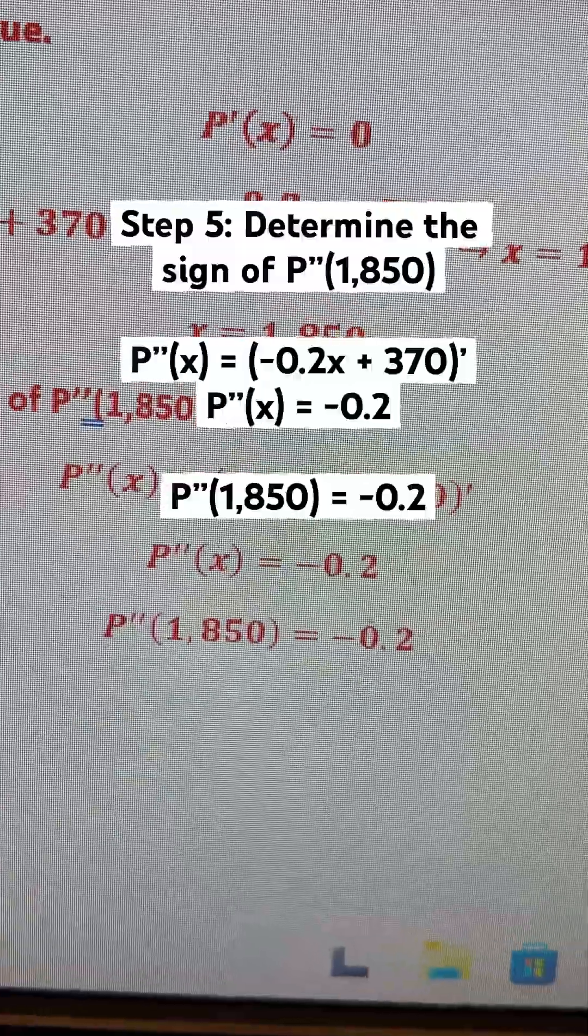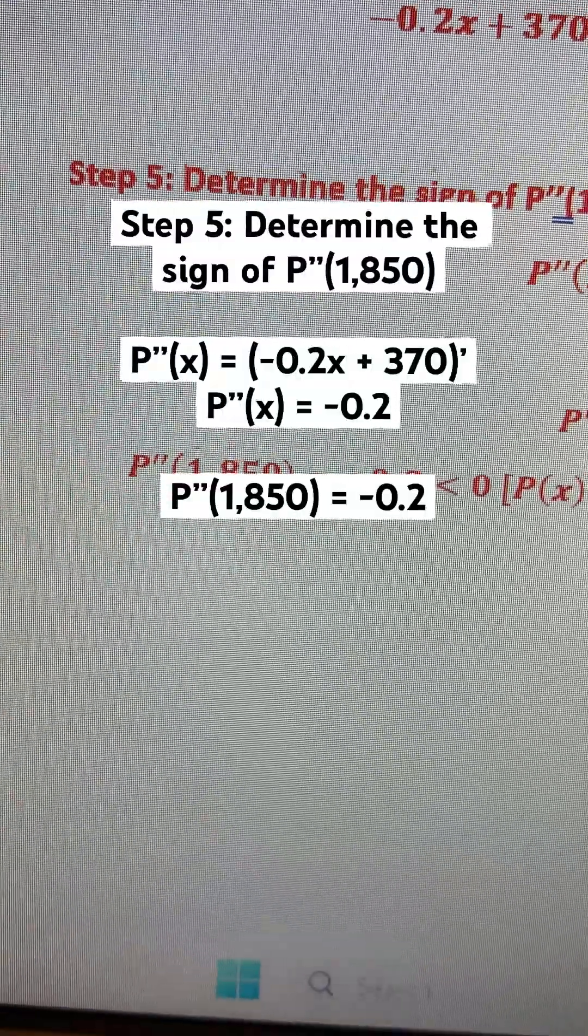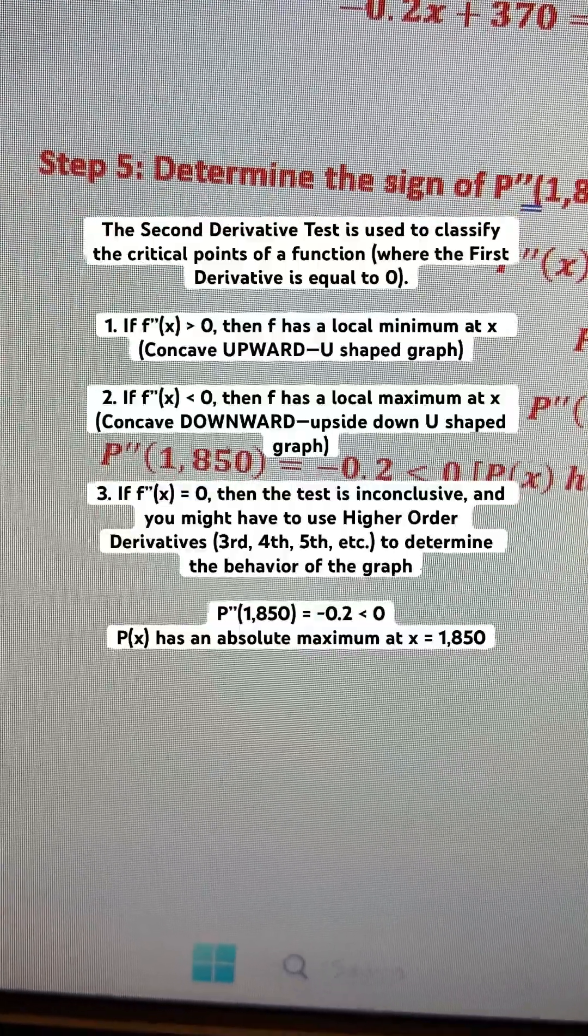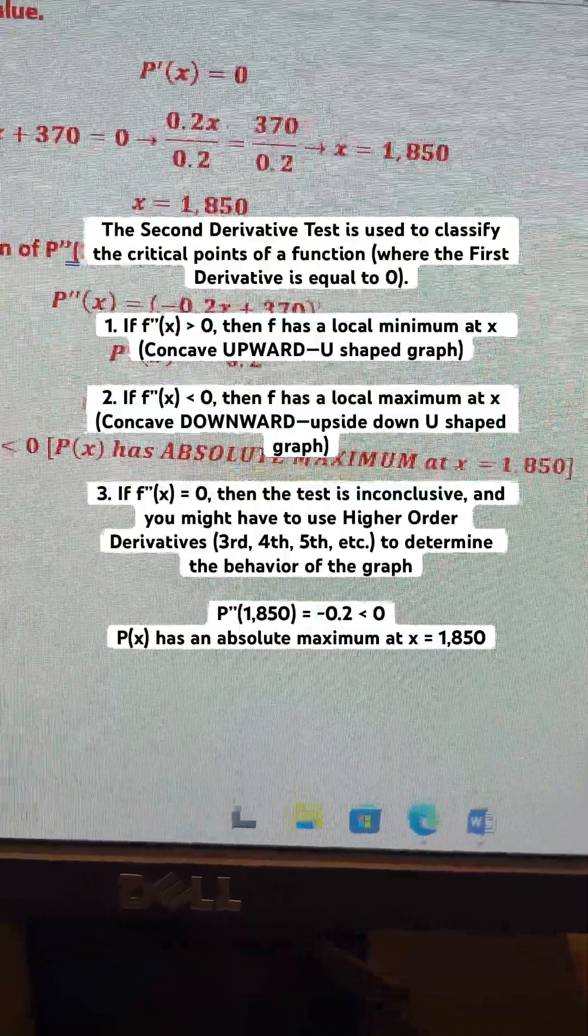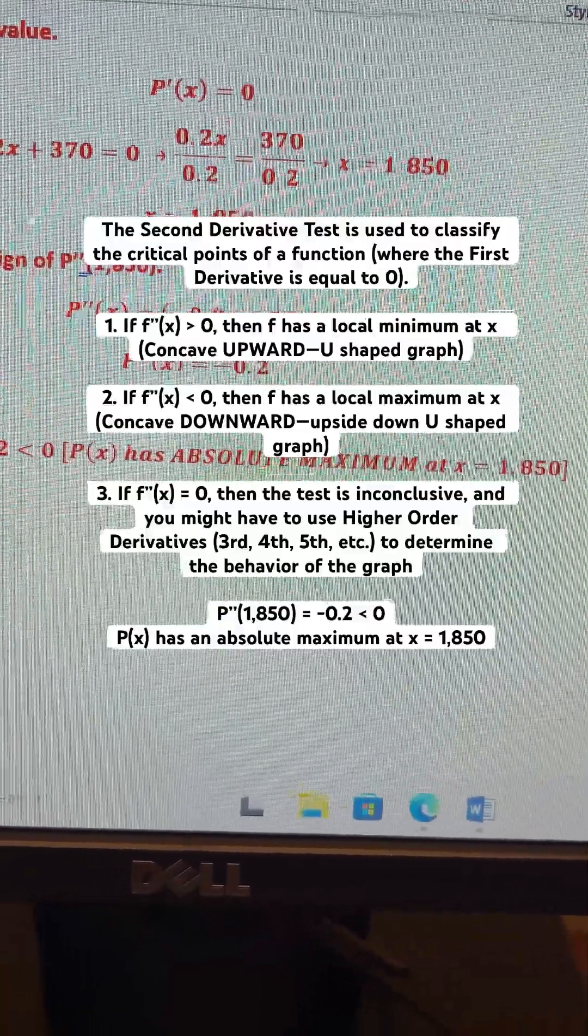And look at that, the sign is negative. Second derivative P''(1850) is equal to negative 0.2, which is less than 0. And that means that P(x) has an absolute maximum at x equals 1850.